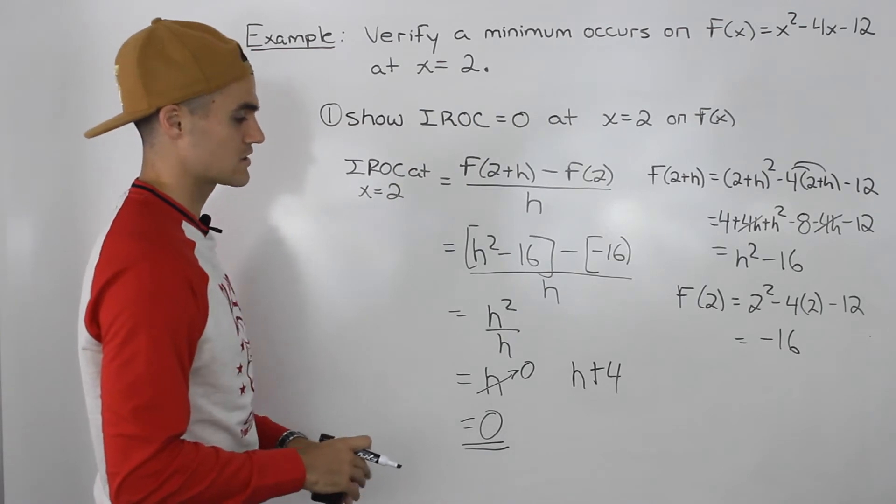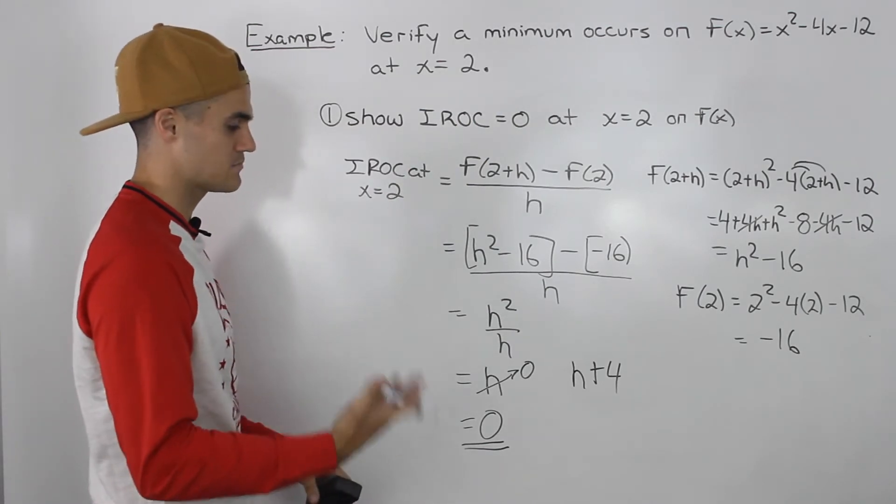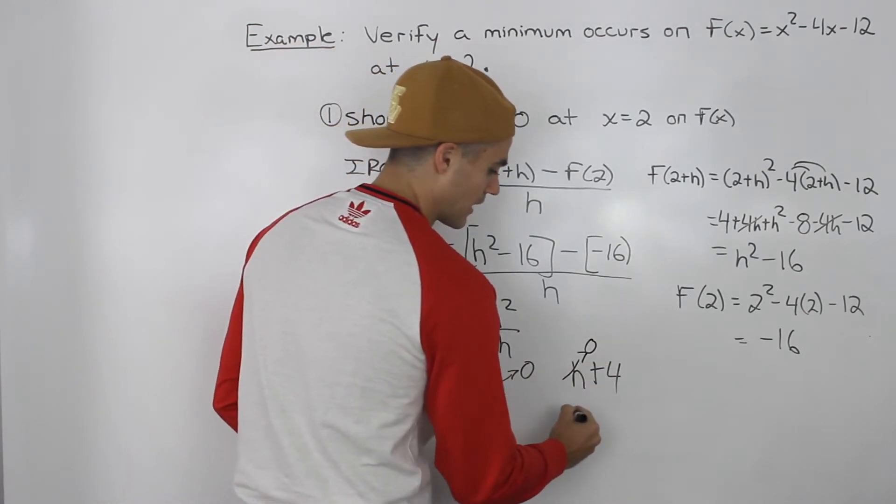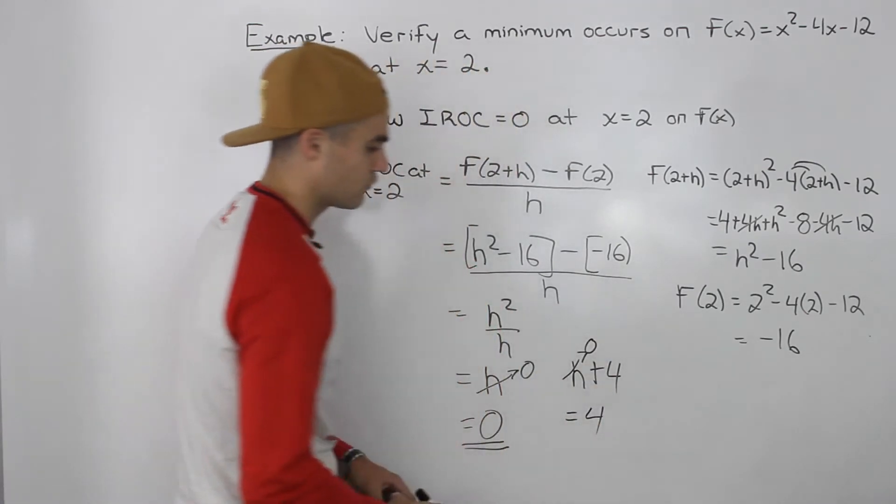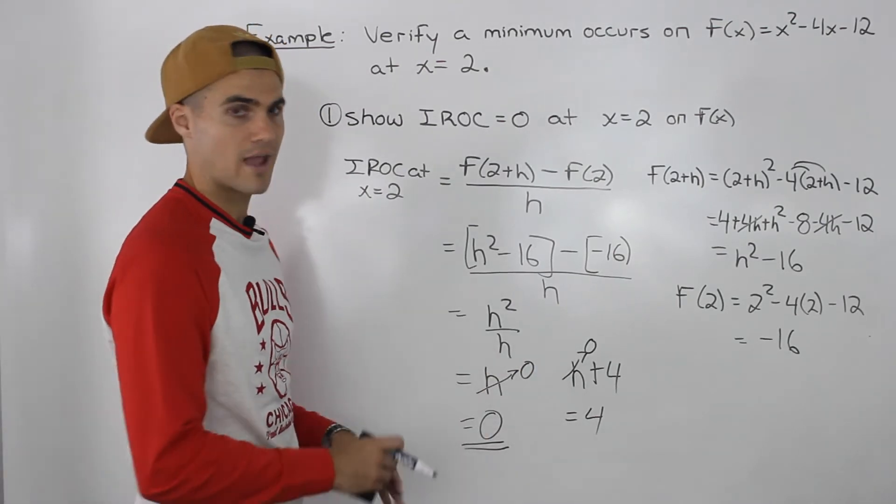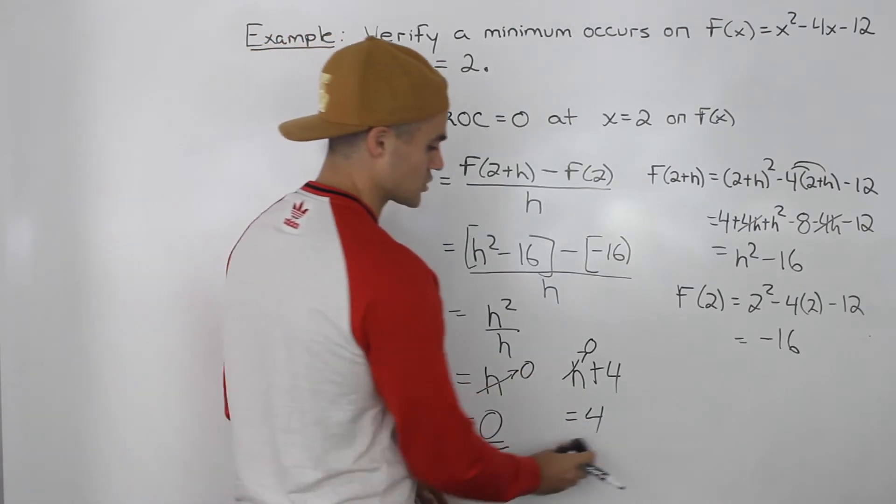If you are verifying that a minimum occurs and they give you that specific x value, the instantaneous rate of change has to be 0 at this point. When we plug in 0 for the h, you would end up getting an instantaneous rate of change of 4 if we ended up with h + 4. So there can't be any constants around.